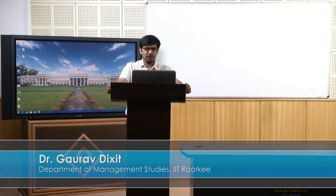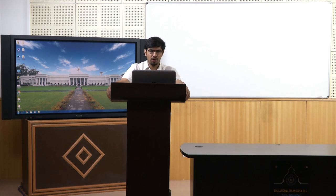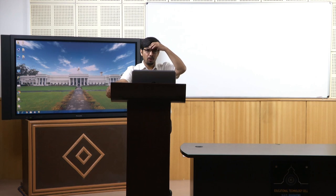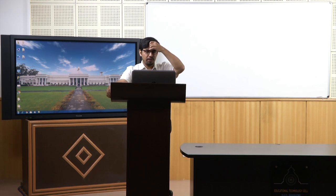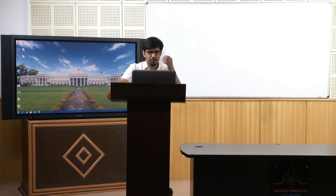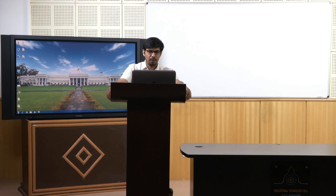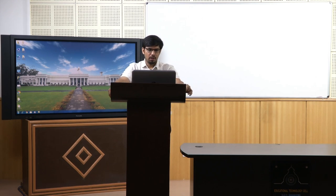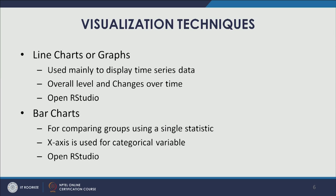For supervised learning methods, the main focus is on the outcome variable, which is typically plotted on the Y axis. Basic charts can also be used for unsupervised learning methods, as we will see through examples in R. Let's now move to our discussion on line charts. Line charts are mainly used to display time series data — we try to see the overall level and the changes that happen in the data over time.